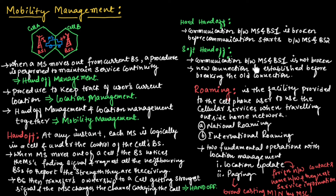In soft handoff, communication between the mobile station and base station 1 is not broken before communication starts between the mobile station and base station 2. Whenever a mobile station moves from base station 1 to base station 2, the existing connection is maintained until communication with base station 2 is established, and only then is the old connection cut off. Because the transition is smooth, this process is known as soft handoff.